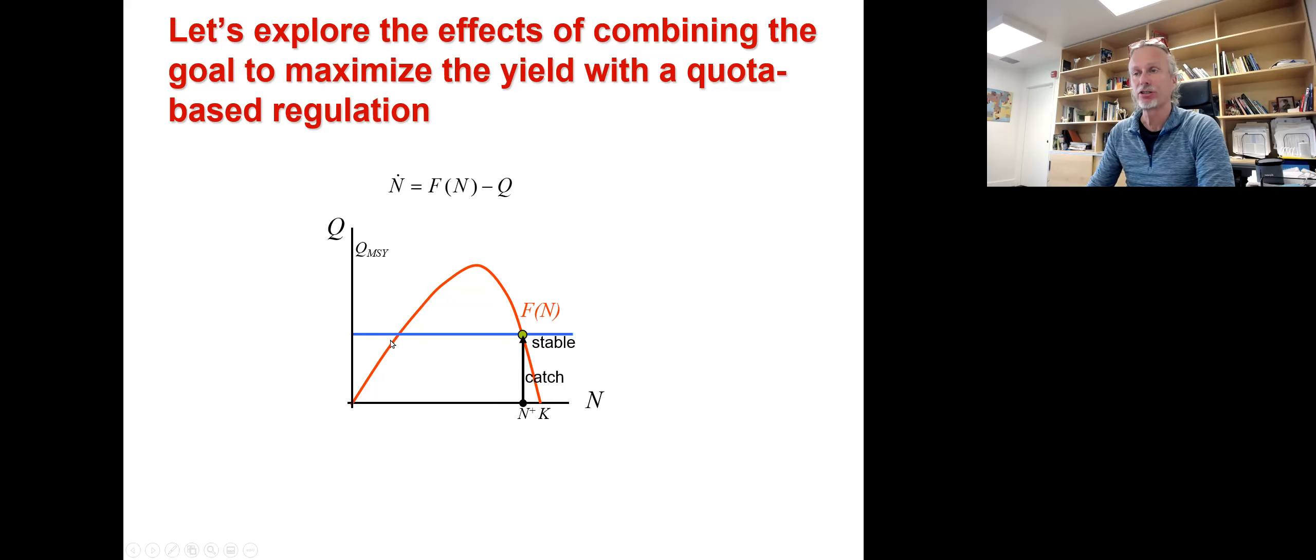Now, have a look at the other intersection point here. What we see is that if there is a little perturbation from this equilibrium point to the right, the recruitment is larger than the quota that is harvested, so the population will tend to move towards the right, towards N+. On the other hand, if there is a little perturbation and the density drops below the level where the intersection occurs, then the harvesting is larger than the recruitment. So dN/dt will be negative, and the population will decrease, going down to basically local extinction. So this equilibrium is an unstable equilibrium. We call this N-.